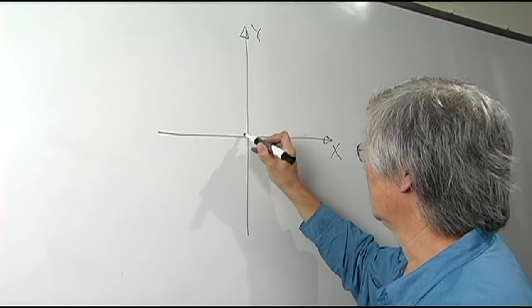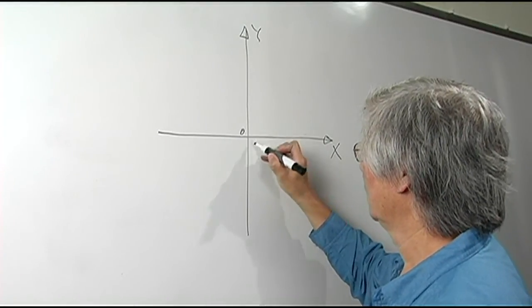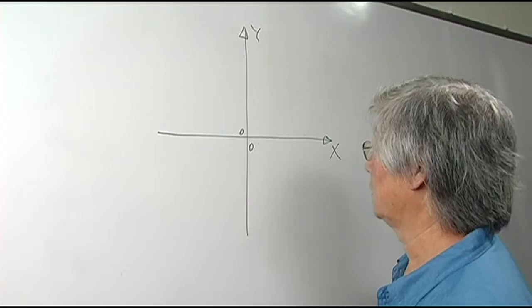Where they cross is called the origin, which has the value zero, zero.